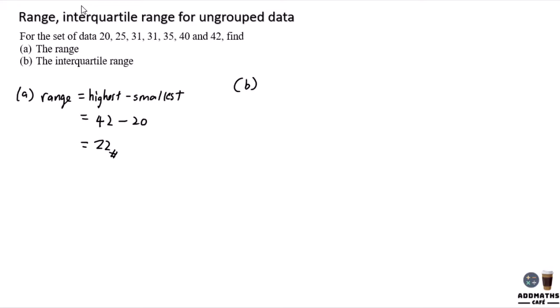To find the interquartile range, first you need to arrange all the data accordingly. Then find your median. So your median will be one, two, three, four, five, six, seven. Total you have seven data plus one divided by two. It is the fourth position. This is your median.